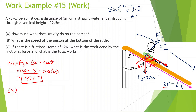Part B: what is the speed of the person at the bottom of the slide? Work total equals change in kinetic energy. The normal force does zero work because it's perpendicular — 90 degree angle, cosine of 90 is zero. So total work is just the work of gravity: 1,875 equals one-half times 75 times v-final squared, with v-initial zero. 1,875 times 2 divided by 75, square root gives us 7.07 meters per second.